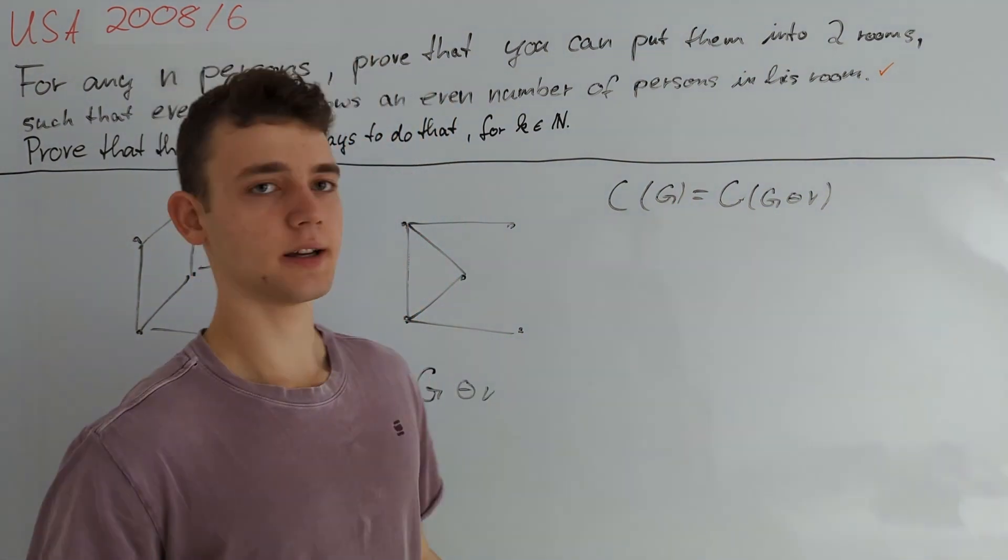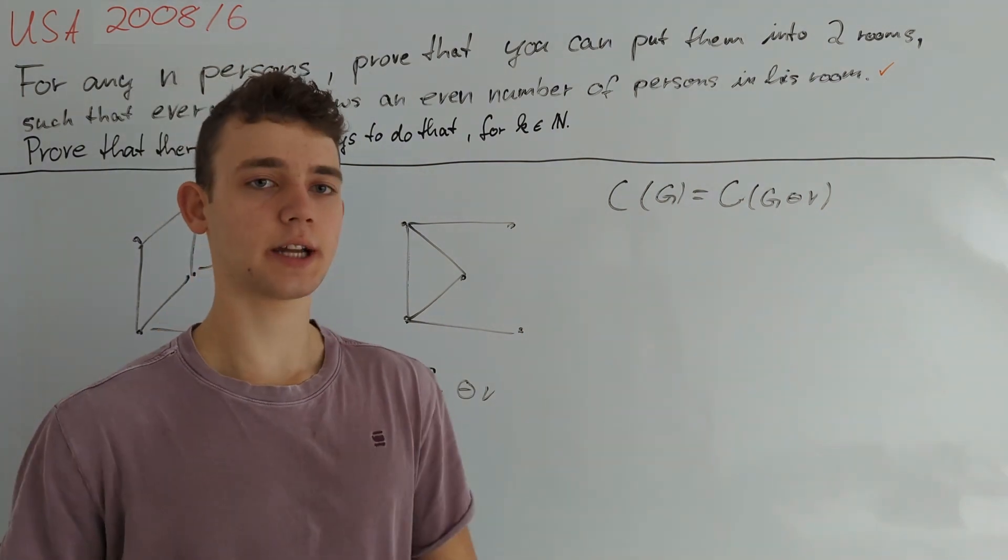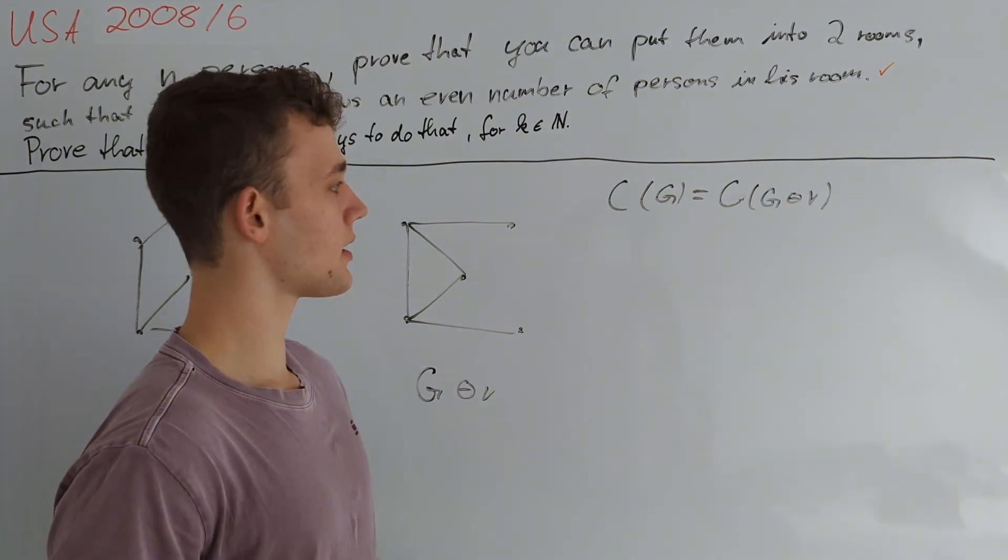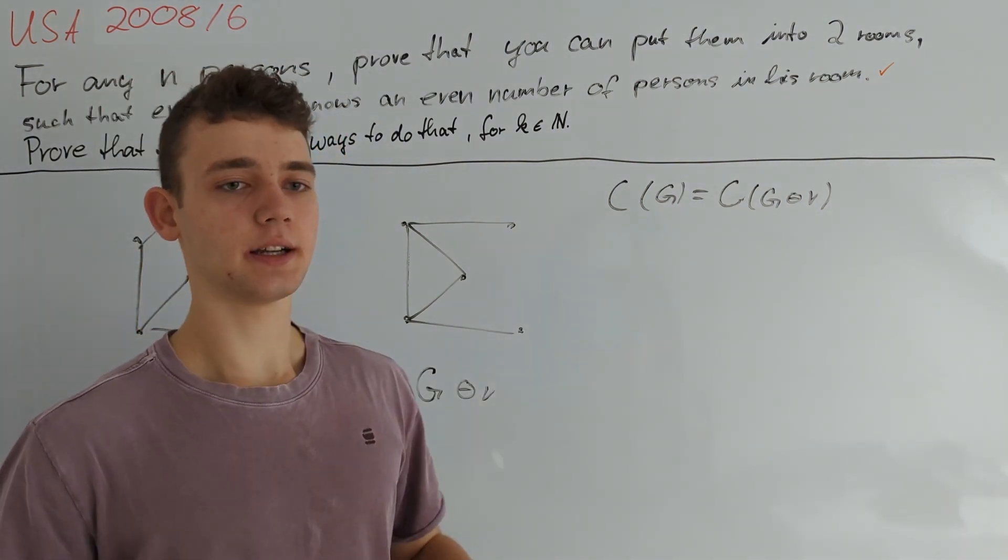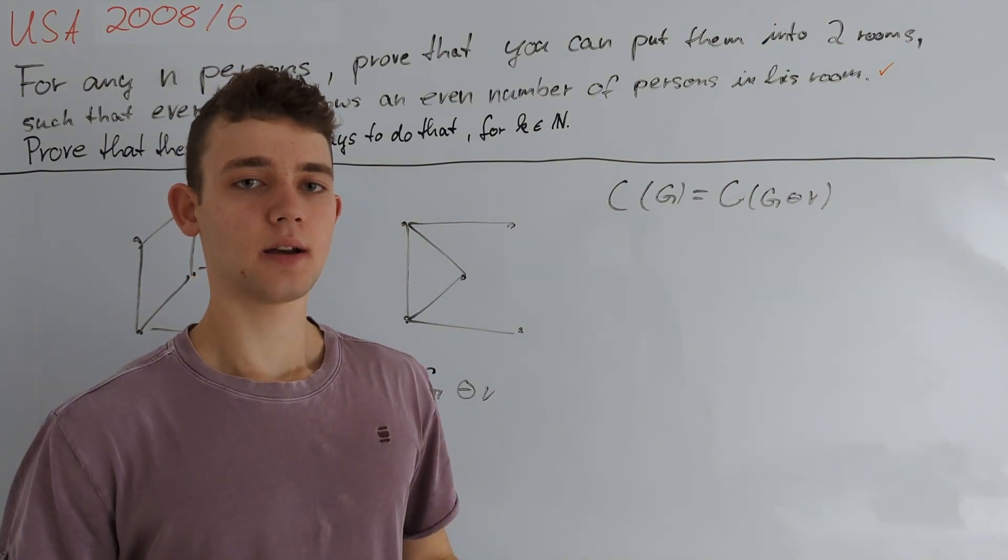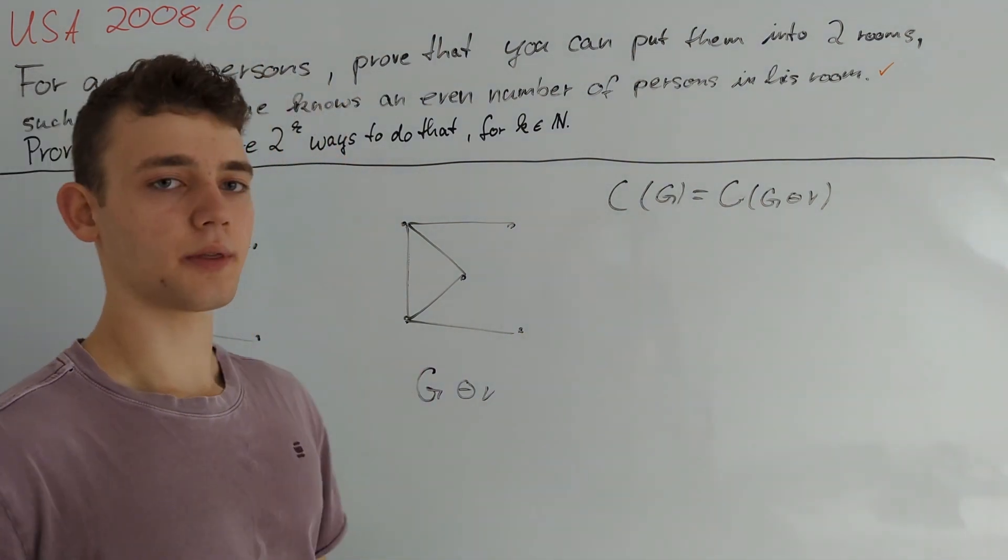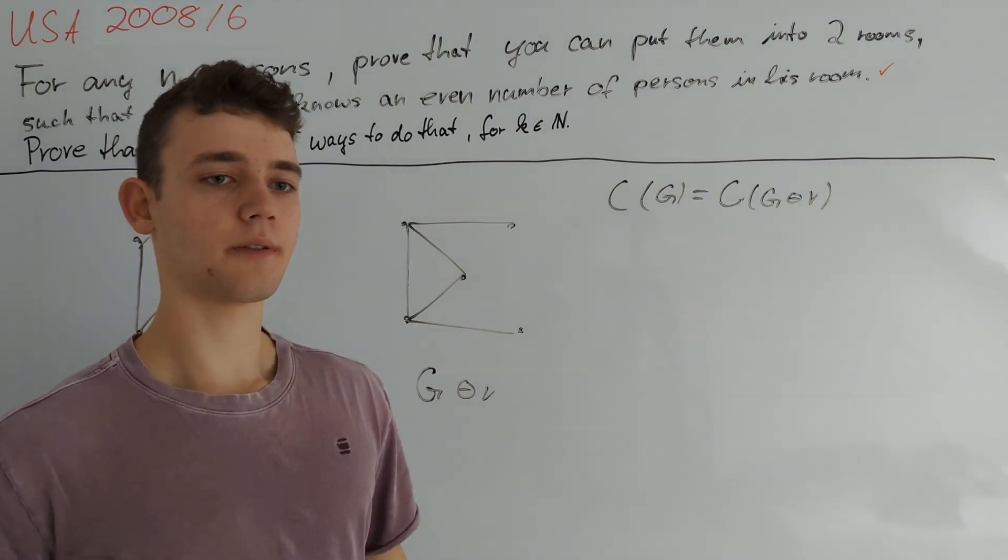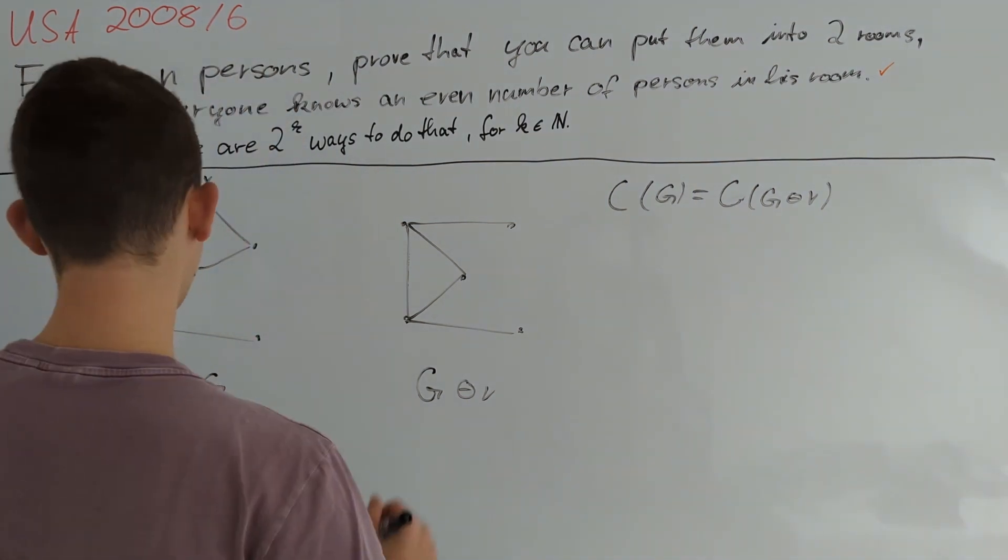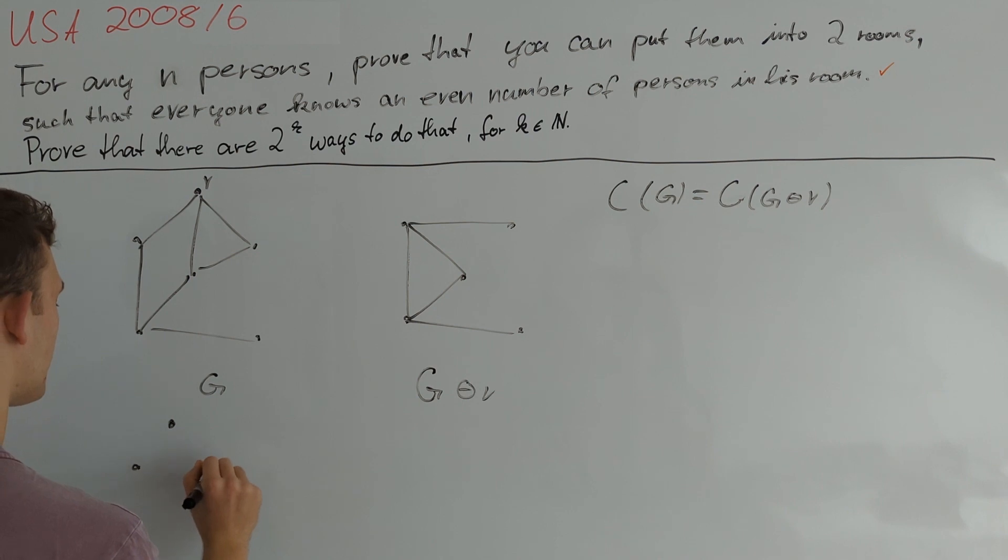Actually there are not too many elementary operations for changing a graph such that the function C(G) is invariant under them. But while playing around with this problem you will probably find another such operation that is a little bit less complicated. And I am going to define this right now.